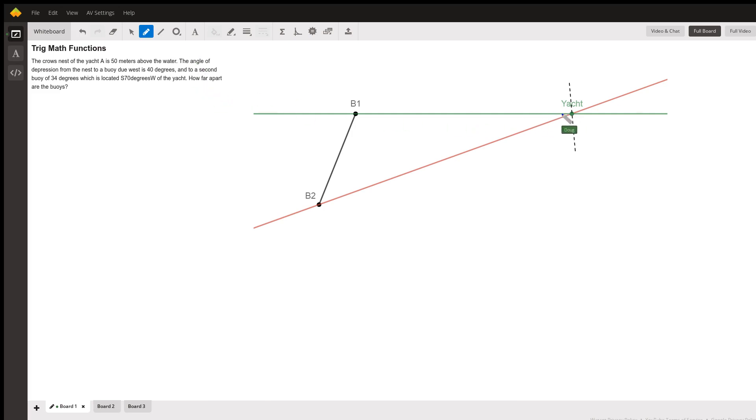Buoy one is due west of the yacht, and buoy two is south 70 degrees west. It's this right here, and 70 degrees west is here, which means that this angle is 20.